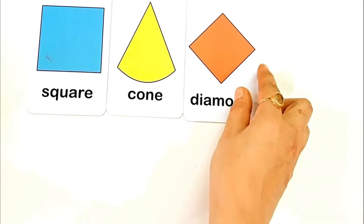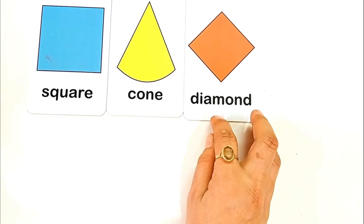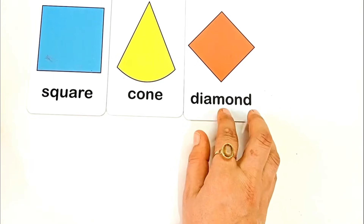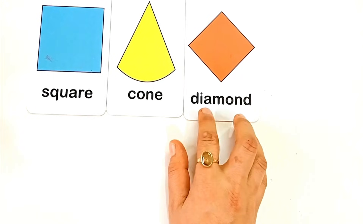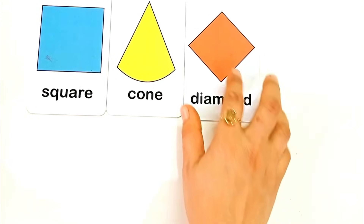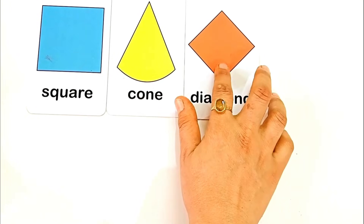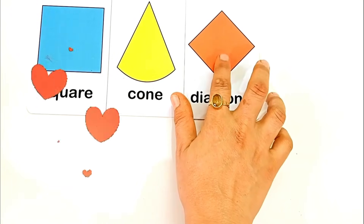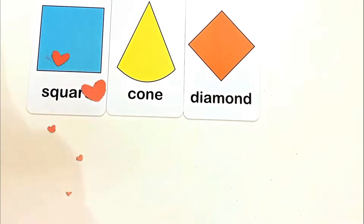D for diamond. D I M O N D, diamond. This is diamond shape, and the color is orange color.